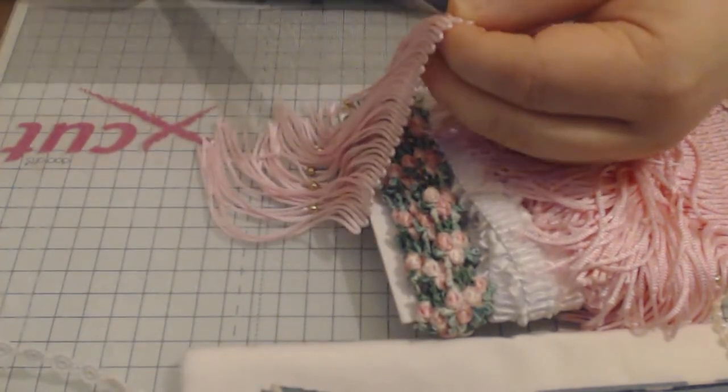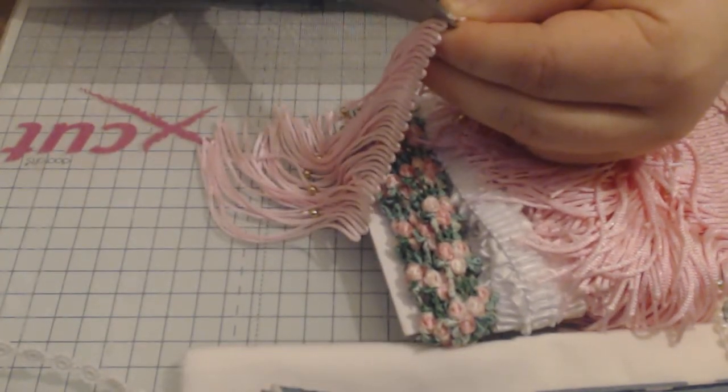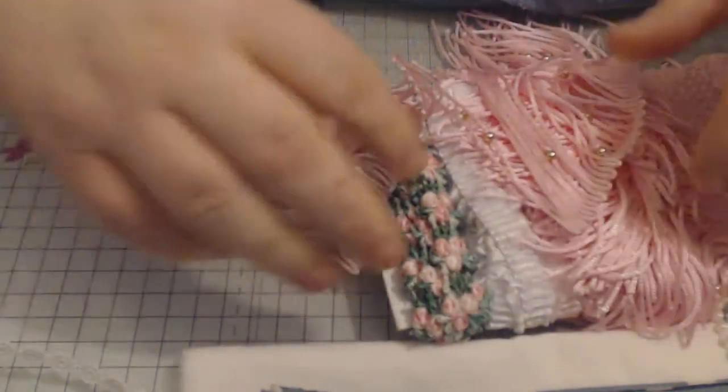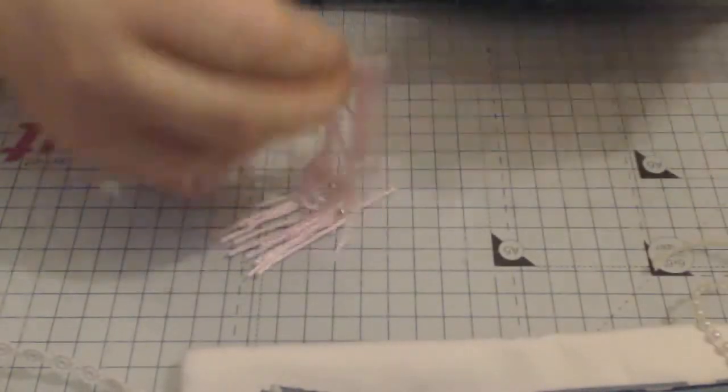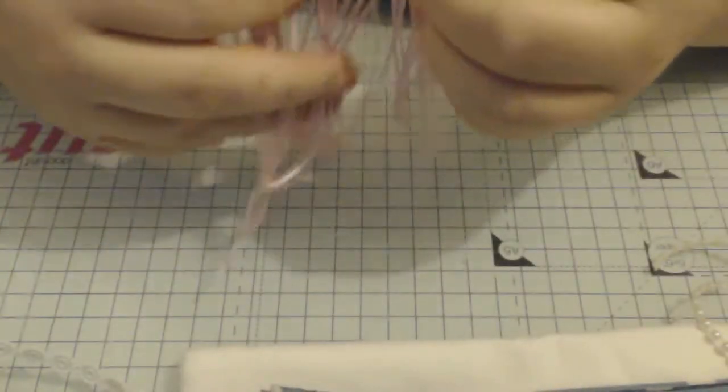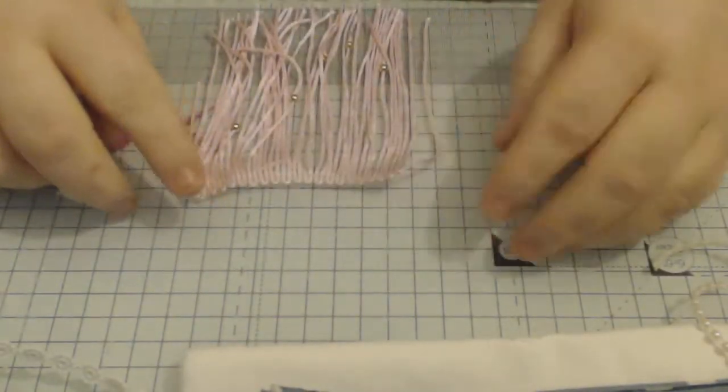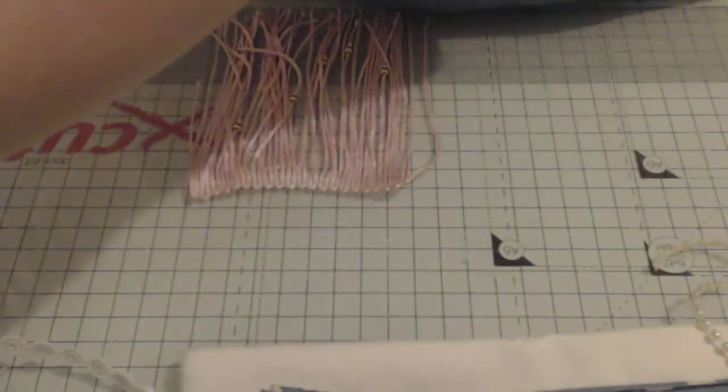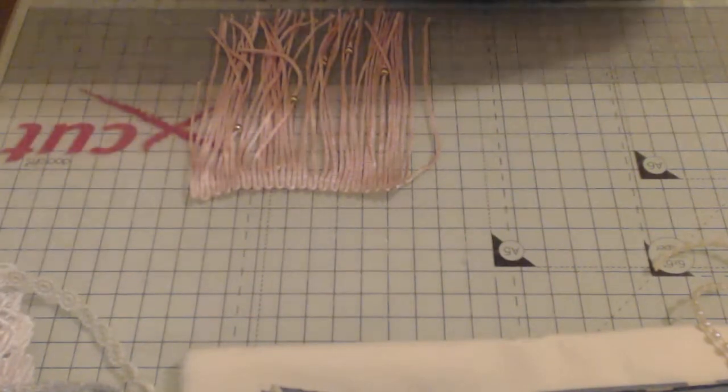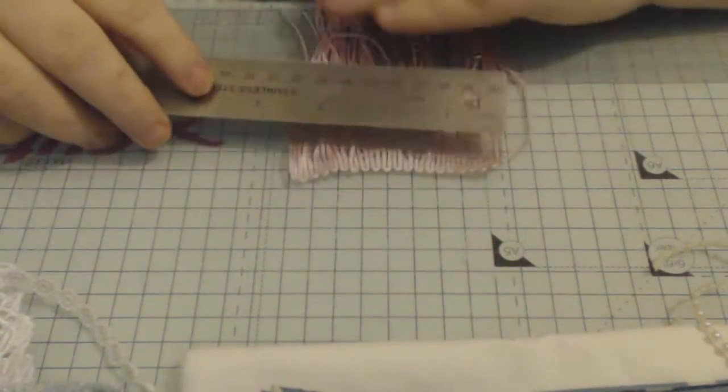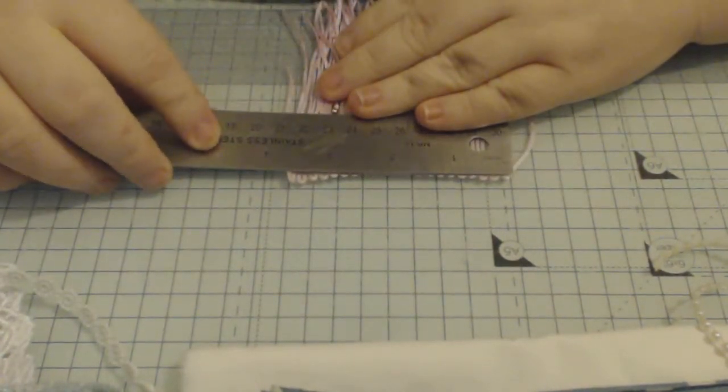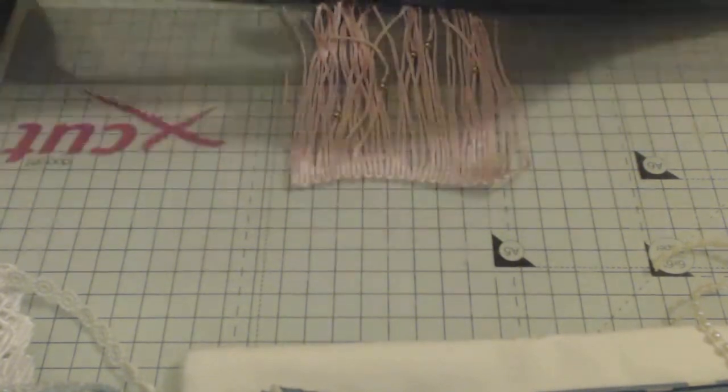So I'm just going to snip a little bit off. Now depending on how thick or how thin you want your tassel will depend on how much trim you use. But I think this is wide enough, so let me measure it for you. So about three and a half, and I think that's a perfect amount for the tassel.